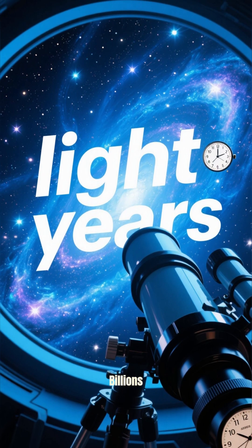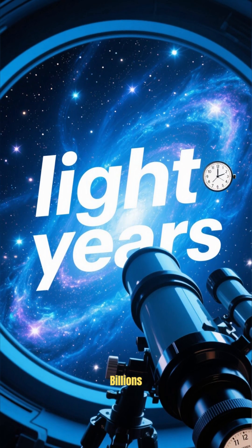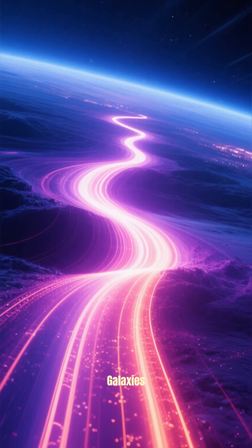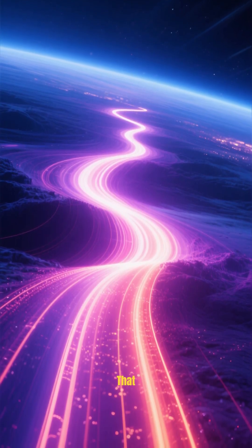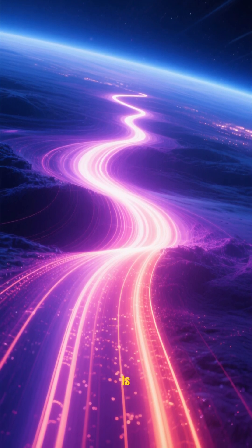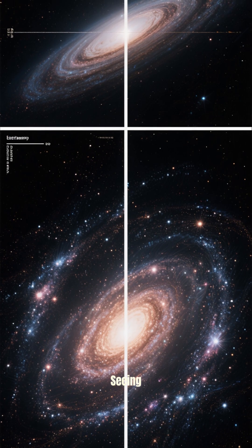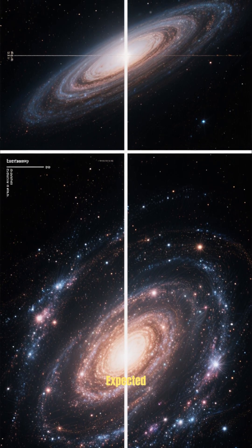When we look at galaxies that are billions of light years away, we're seeing them as they were billions of years ago. And these galaxies are so far away that their light has been stretched out to infrared wavelengths, which is the only light that can reach us from them. And what we're seeing is that they're bigger and brighter than expected.